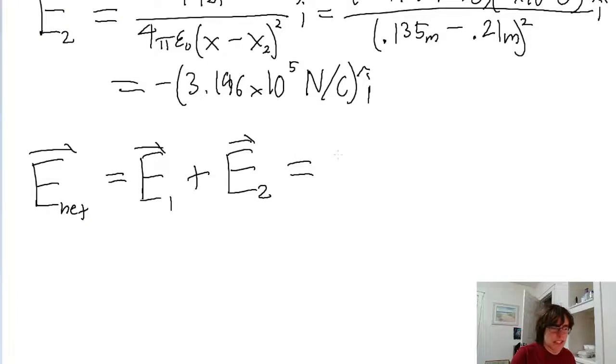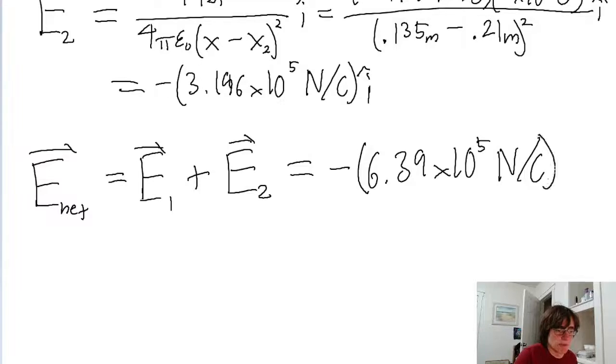And so putting that into a calculator, we find a net electric field of negative 6.39 times 10 to the power of 5 newtons per coulomb. And the unit vector does not change, it's still in the i direction. So this is our net electric field. And that is it for this problem.